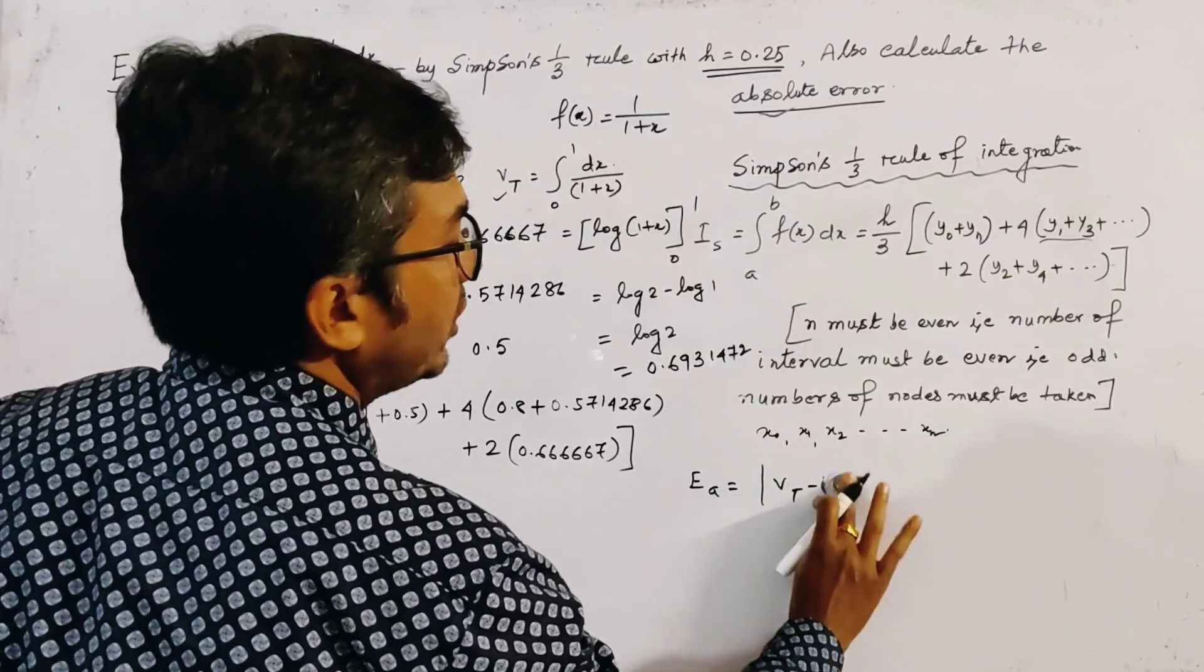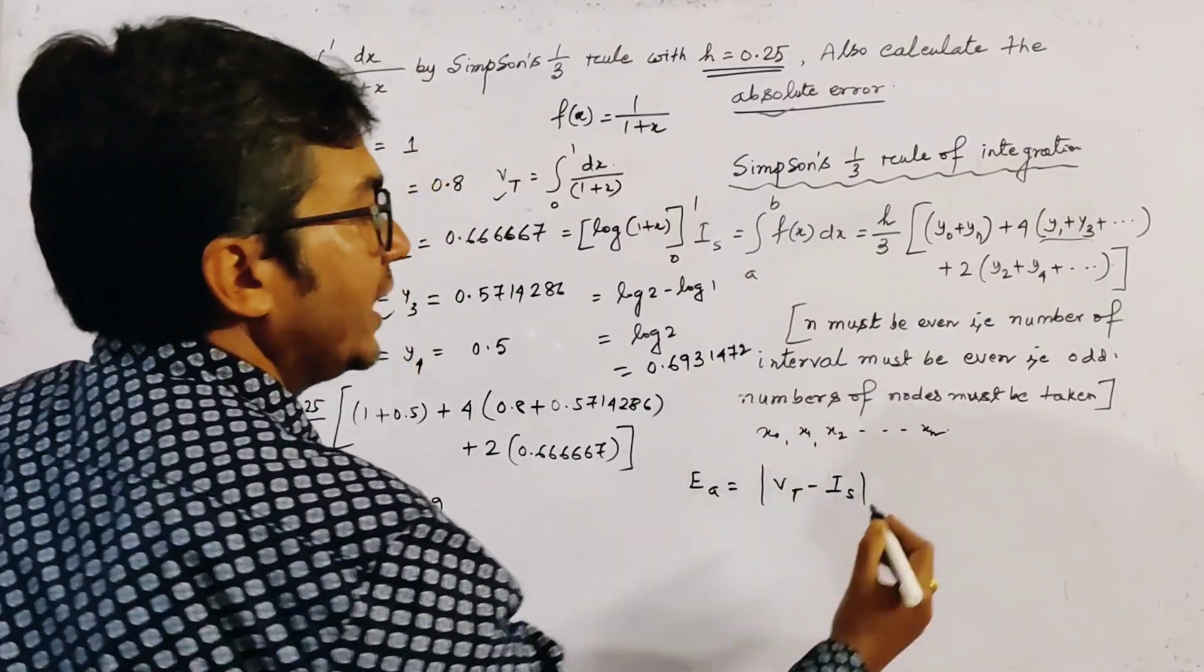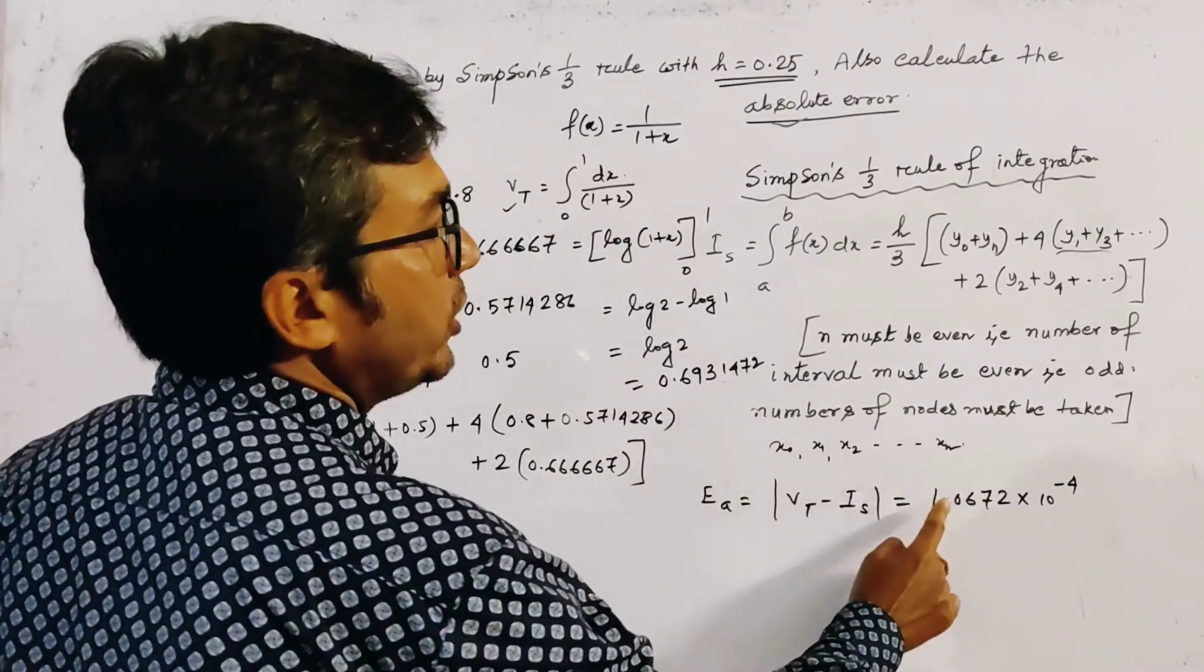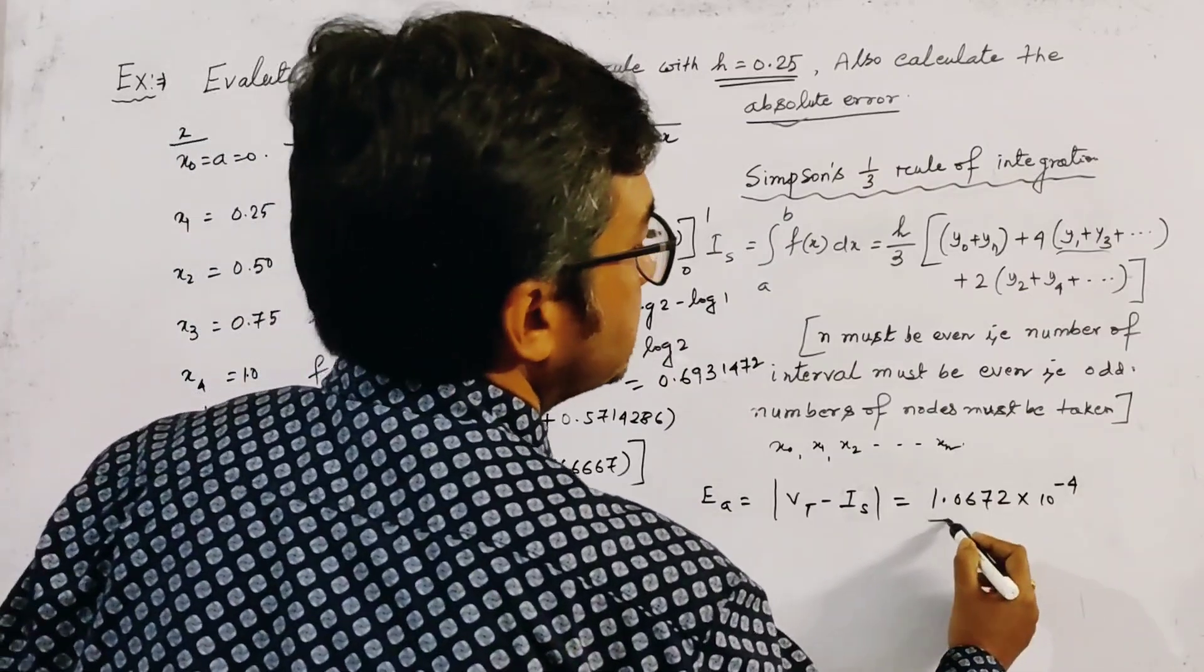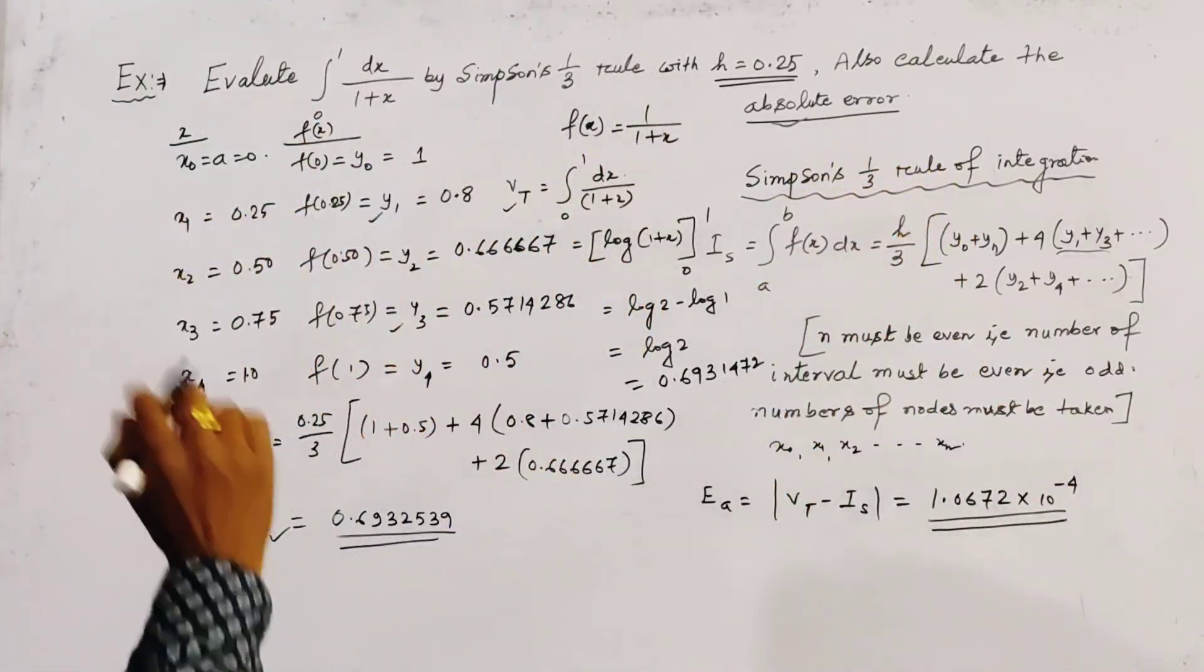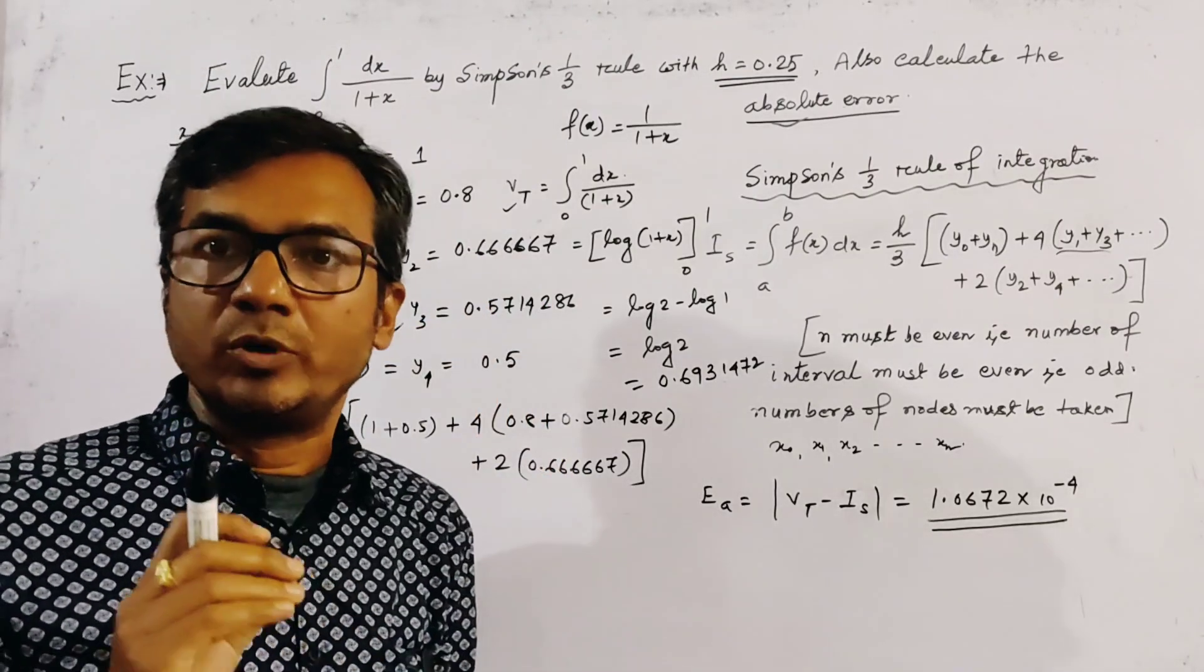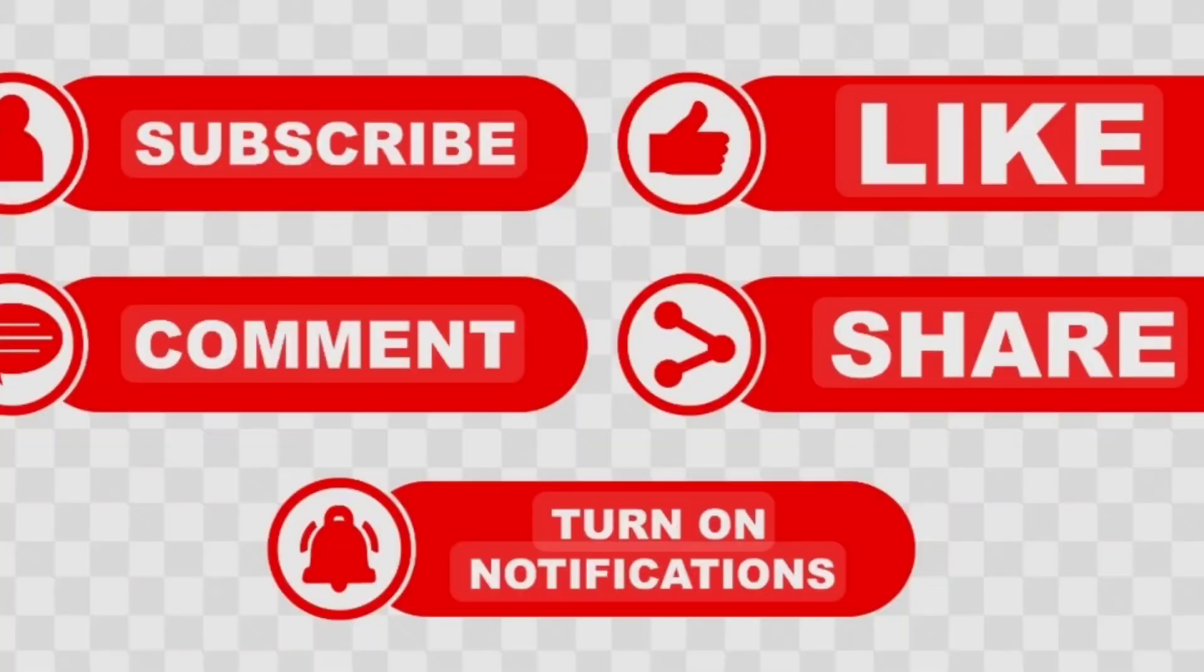Here we write VA as S, so the absolute error EA is given by this minus this: 1.0672 times 10 to the power minus 4. This is our absolute error for this problem by Simpson's one-third rule, and this is the approximate value of this integration. Thank you for watching.